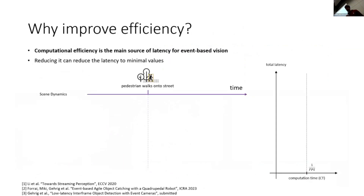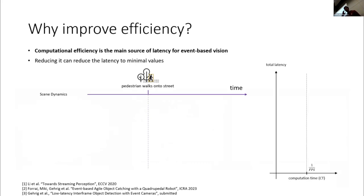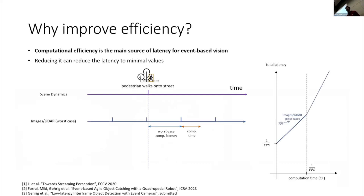Before we go further, I want to go into a small tangent explaining why we actually have to care about efficiency. Imagine you have this scenario where you want to detect something in very low latency — one of the use cases of event cameras. Imagine there's a pedestrian walking onto the street.